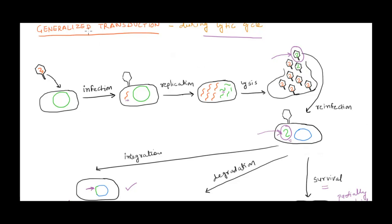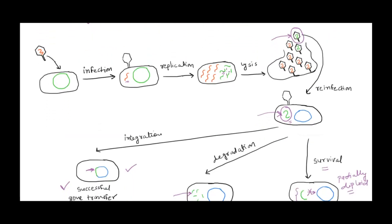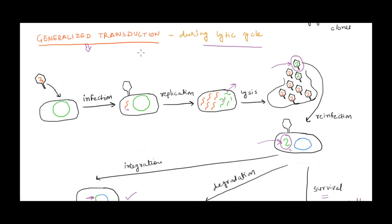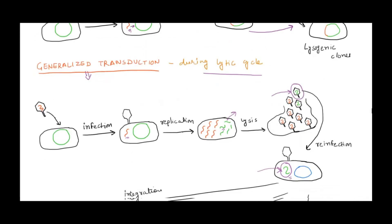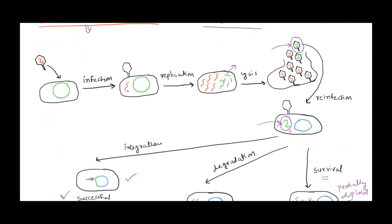Now, why is it called generalized transduction? Because during packaging, any random piece of bacterial DNA that fits into the coat gets packed — there is no specificity about which part of the bacterial genome is packed. Any random fragment of the bacterial chromosome can be packaged, and that is why it is called generalized transduction.